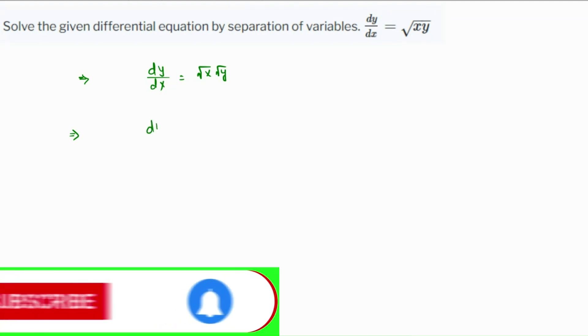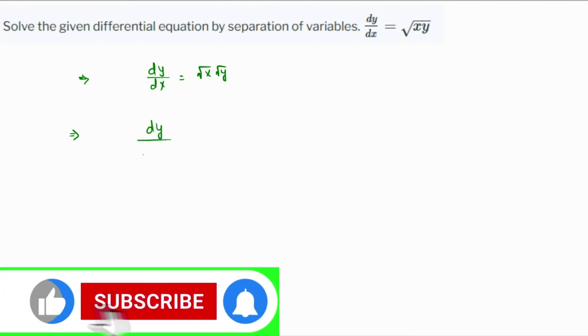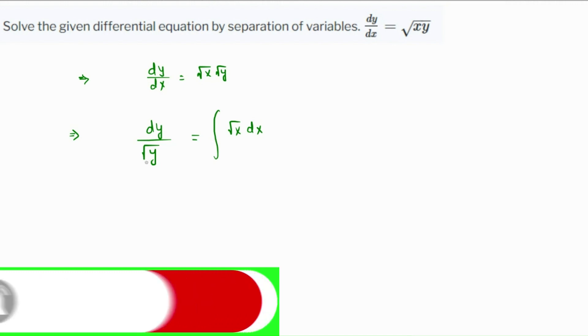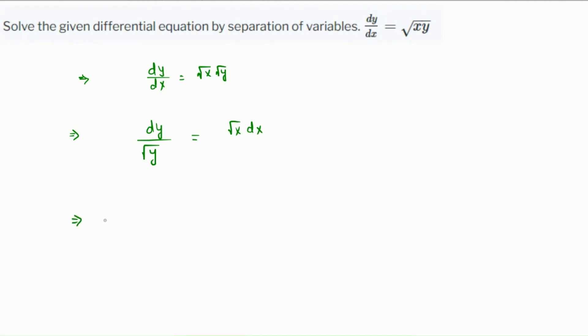In short, we are cross multiplying. The root y comes in the denominator over to the other side, and the dx goes over to the other side. Now we can integrate. Before integrating, let's bring this one over root y over to the numerator, so the power will become negative. It's y raised to minus 1 over 2 dy.